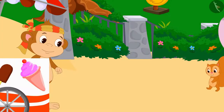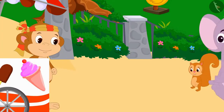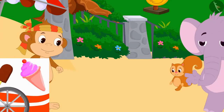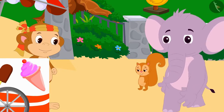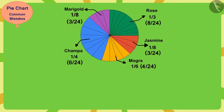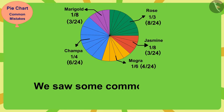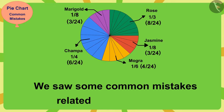Both Chanda and Appu went to eat ice cream. Children, in this video, we saw some common mistakes related to the pie chart.